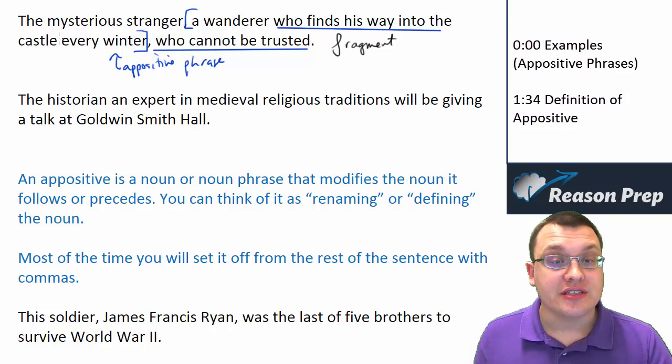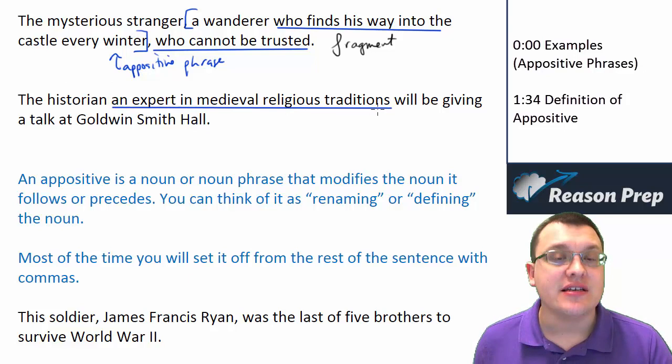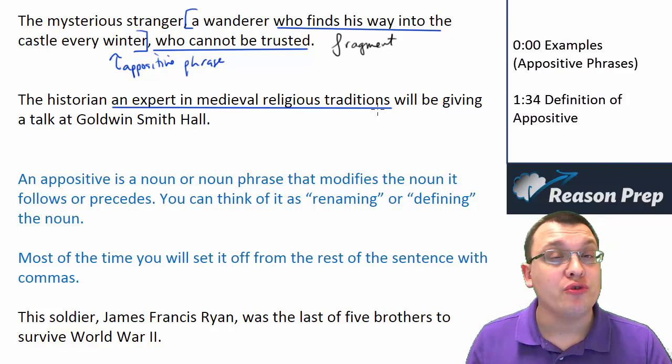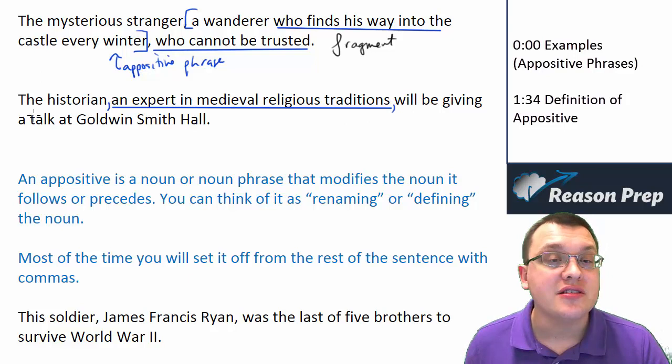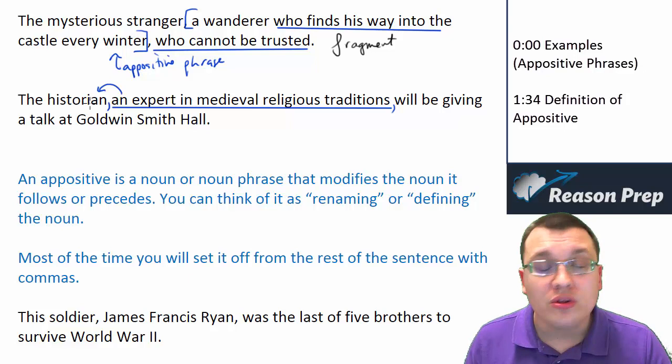Here's another example: 'The historian an expert in medieval religious traditions will be giving a talk at Goldman Smith Hall.' Here we have an appositive phrase in the middle of the sentence — 'an expert in medieval religious traditions' — but this is one of those situations where we have to do the two or none situation with commas. We need commas surrounding this phrase because it is additional information about who the historian is, not essential to the grammar or core sense of the sentence. Most appositive phrases you're going to surround with commas. Only in rare situations do you not use commas at all.